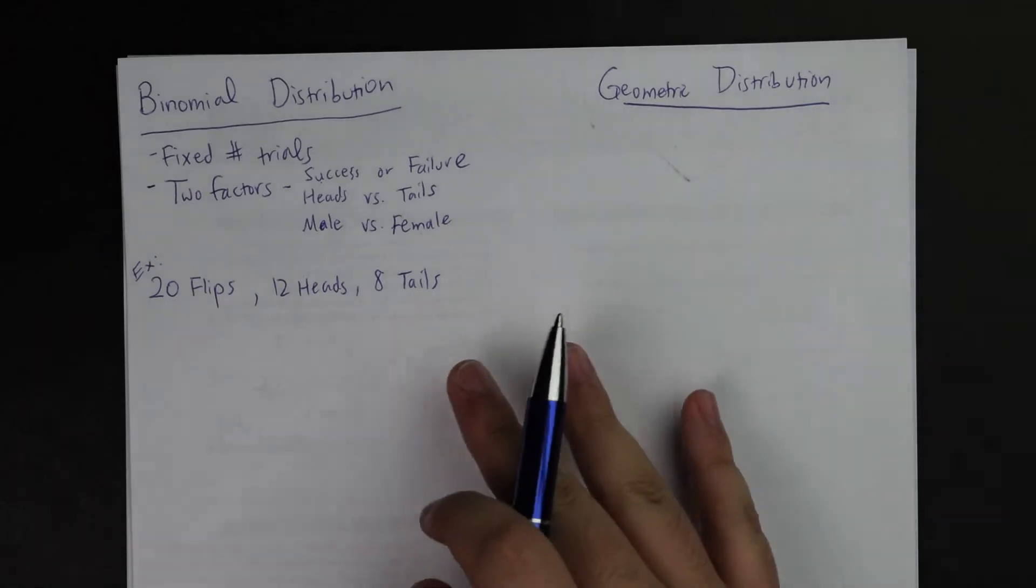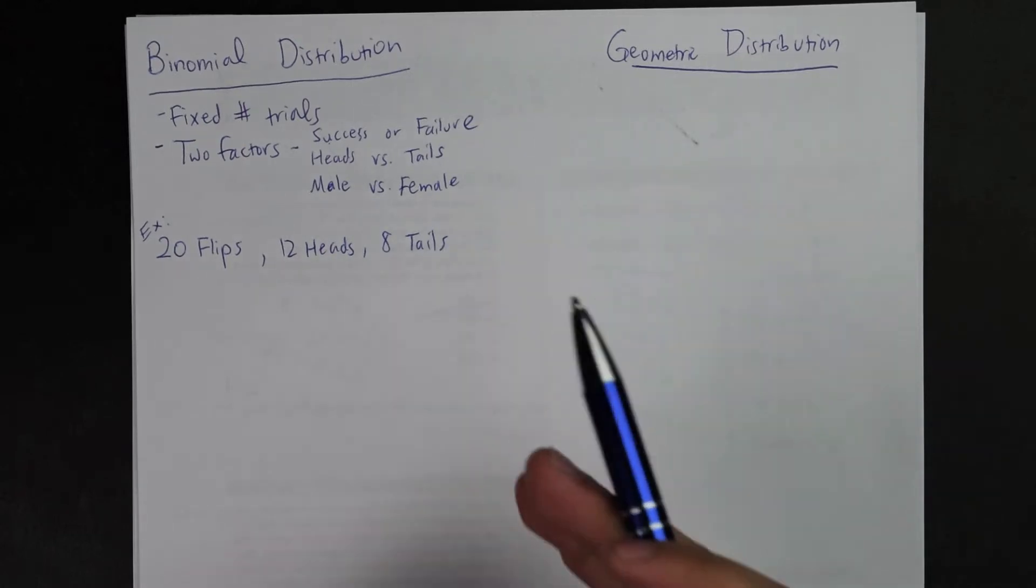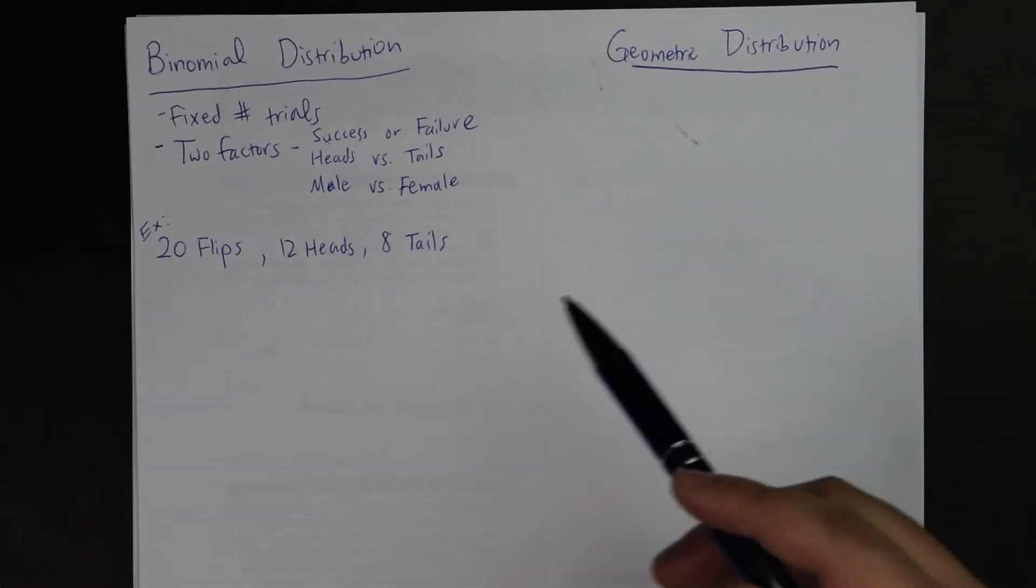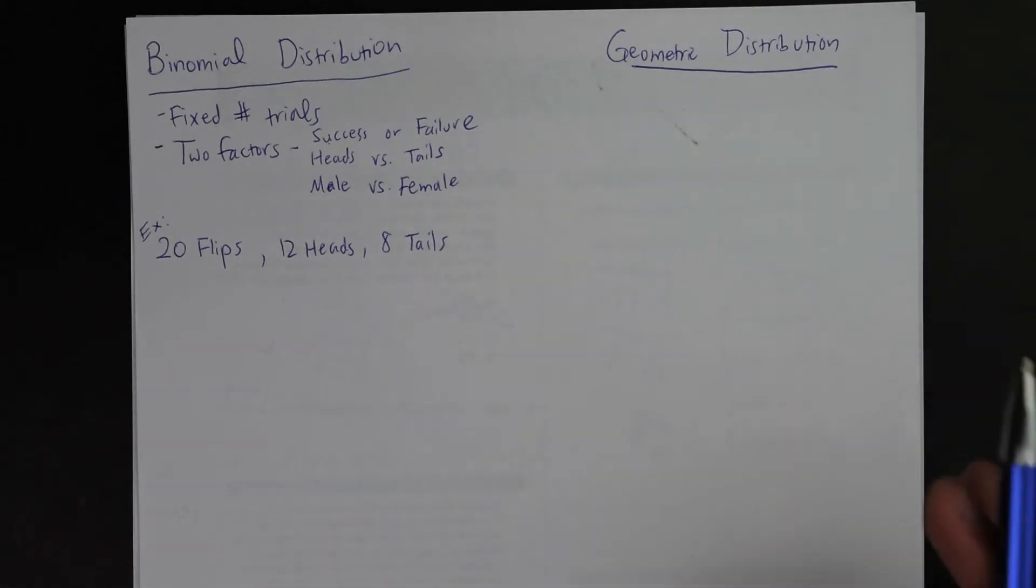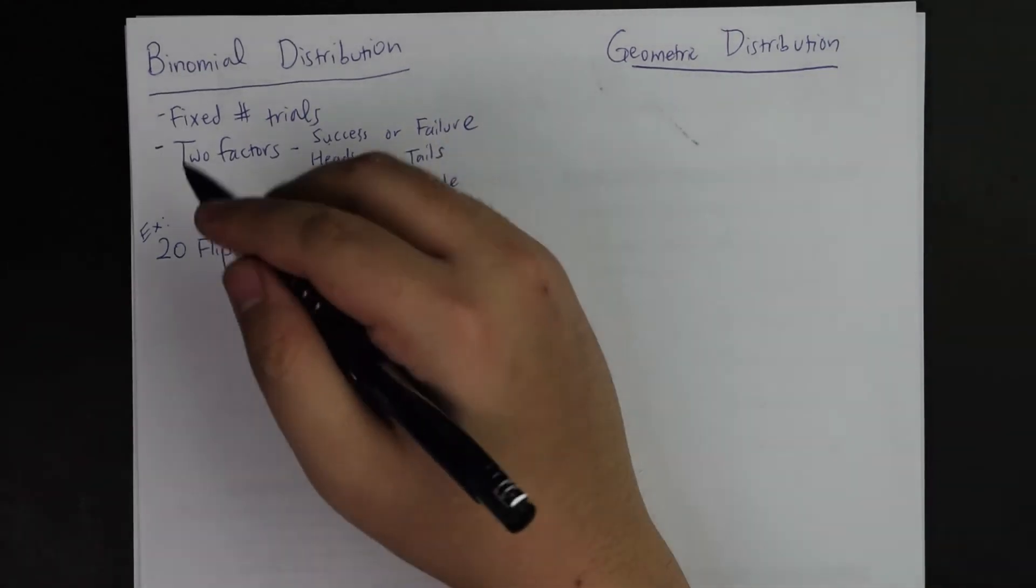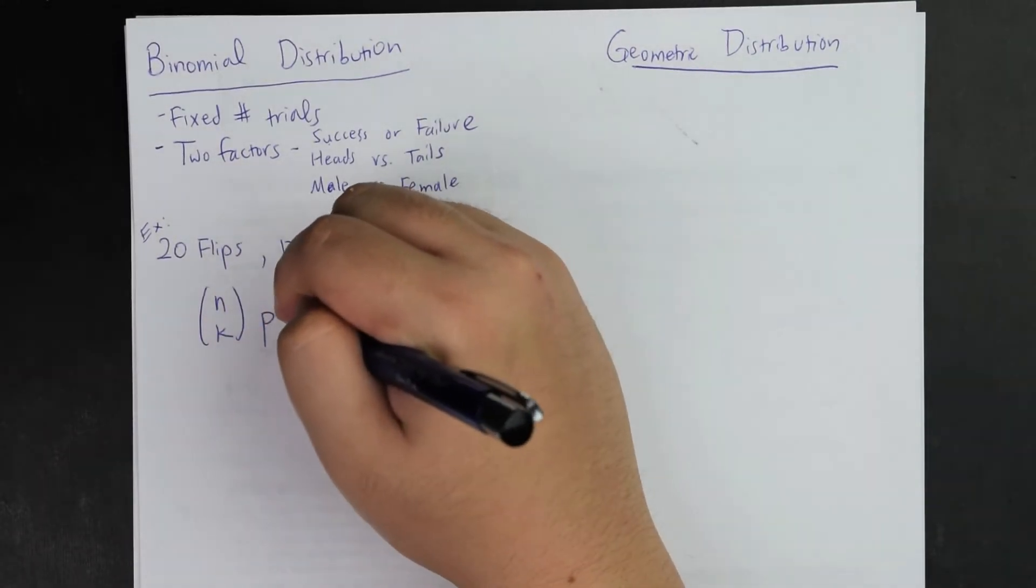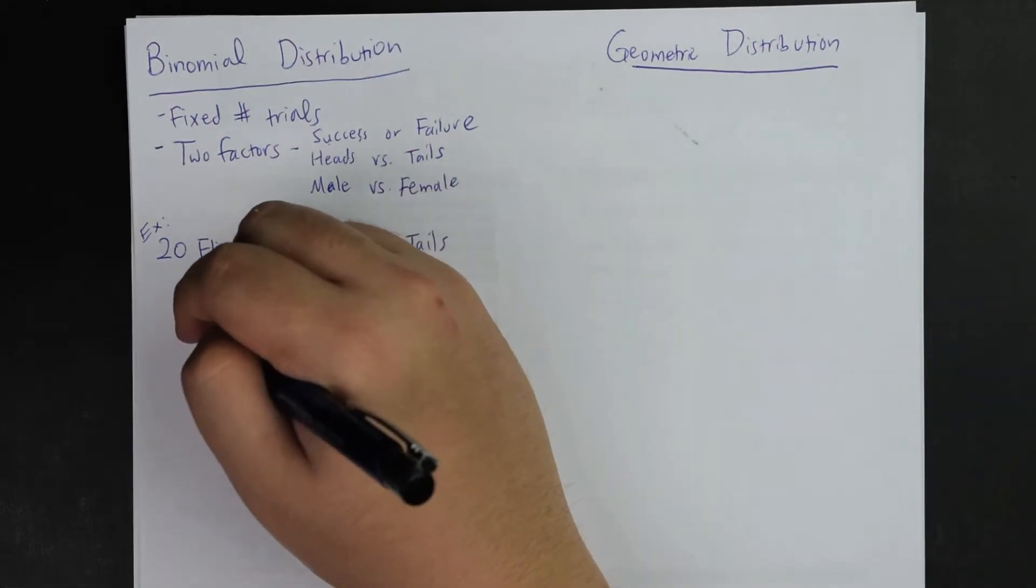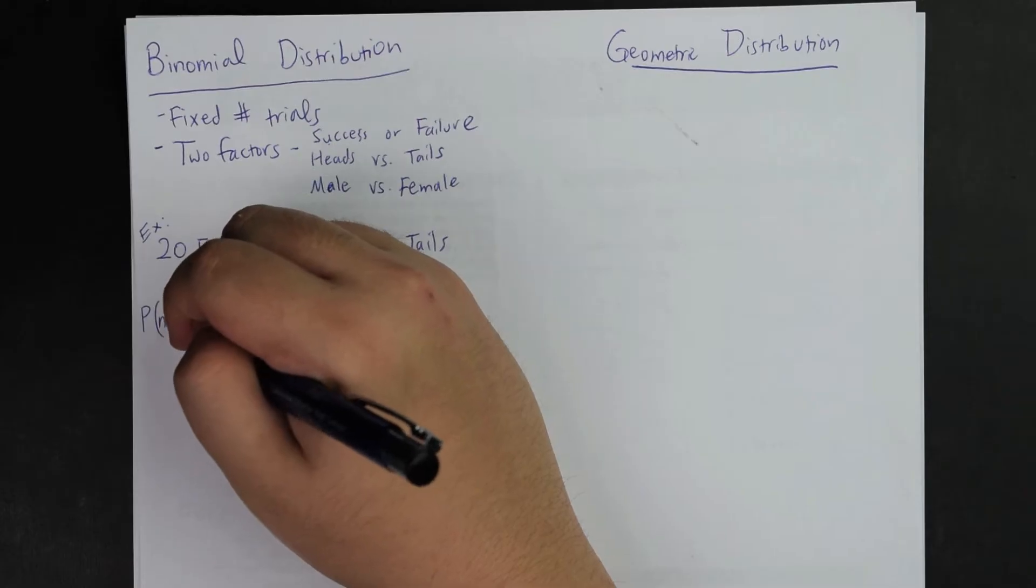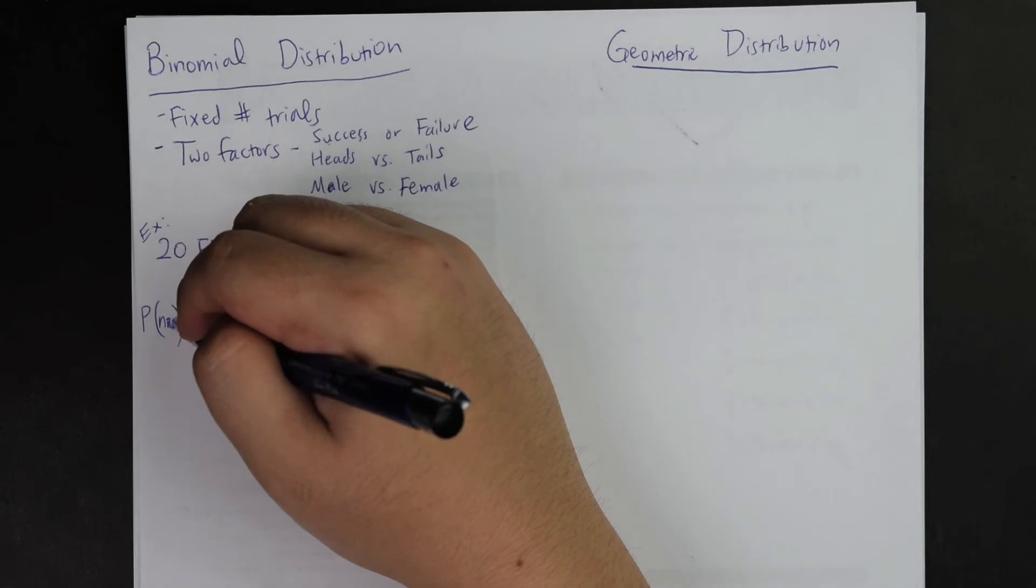That's where this binomial distribution question comes into play. And you have to understand that because there's no number of successes that are defined here, there's just 12 heads, 8 tails, automatically it's very clearly stated to me that this is going to be a binomial distribution since there's only two possible choices available. And thus, that's where the equation comes into play, where it's nCk * p^k * (1-p)^(n-k) equals the probability of n.